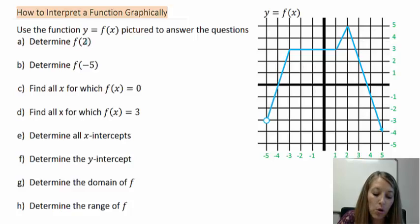If my input or my x value is 2, I want to figure out what my corresponding y value is. So I figure out where my x value is 2 right here. So I need to figure out what my corresponding y value is. So here's my ordered pair. So my corresponding y value is 5. So that means f of 2 is 5.